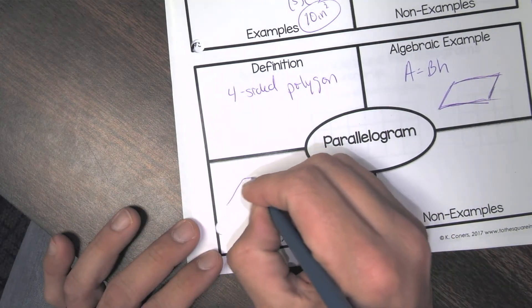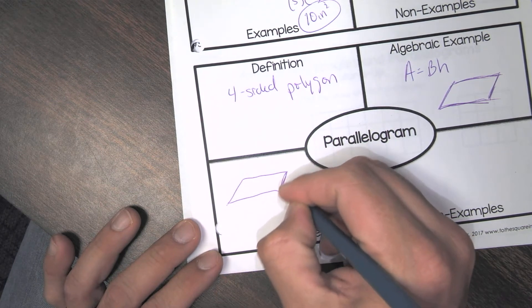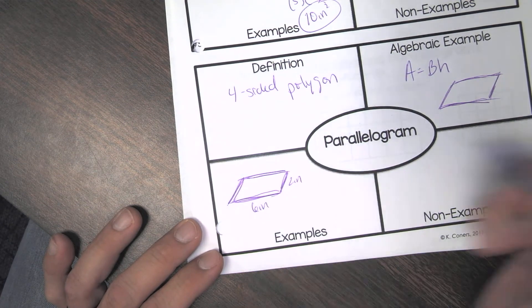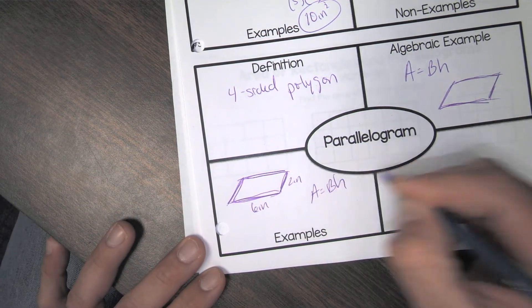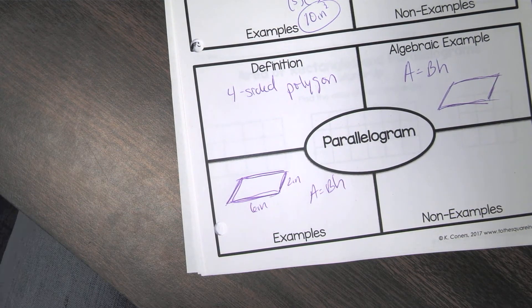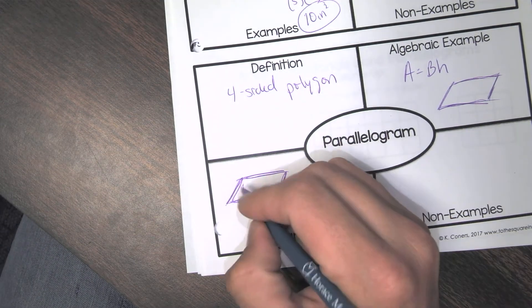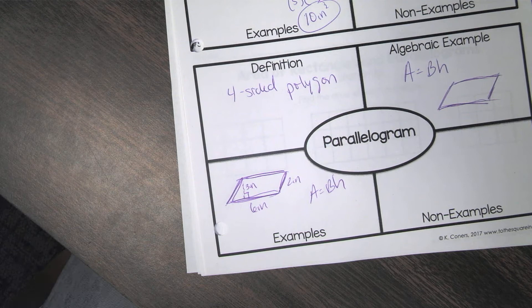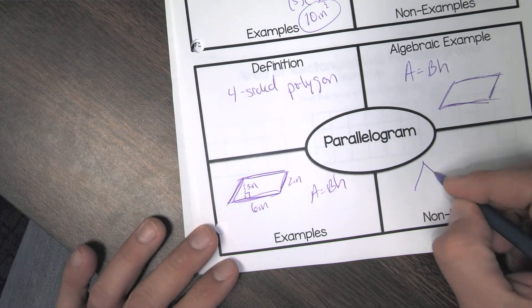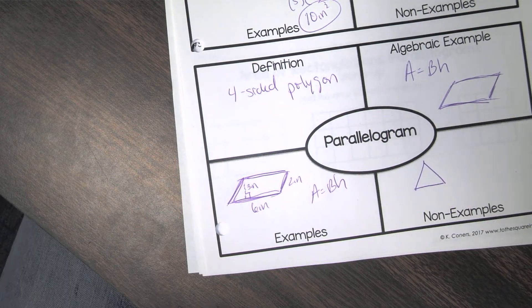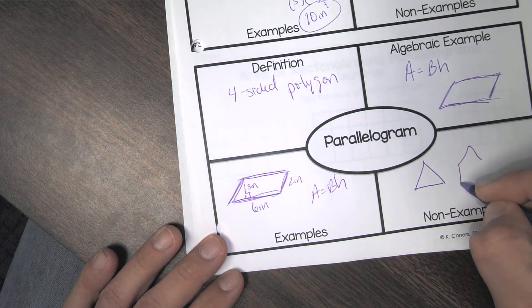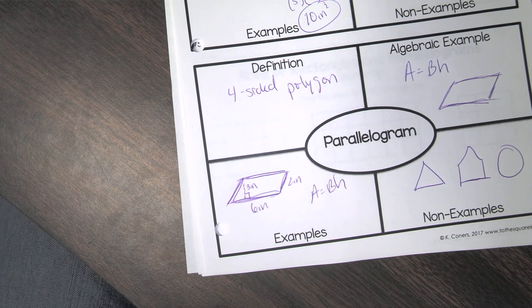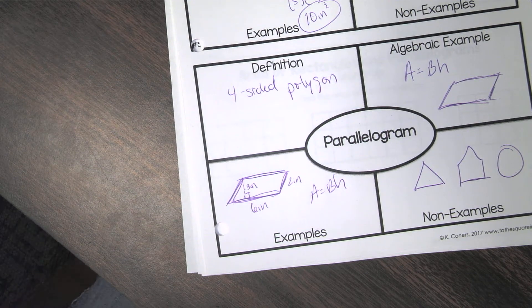So an example, you would draw one, however which way you want to. Include some lengths, two inches, six inches. Put the area formula down. Plenty of stuff you can put. So the non-example, you could literally put a rectangle. Three sides. Or a pentagon. Or a circle. All three of those work.